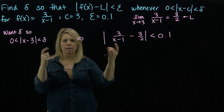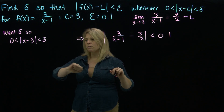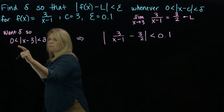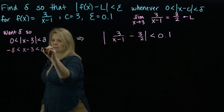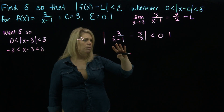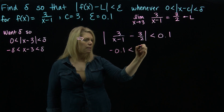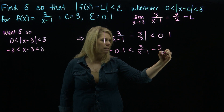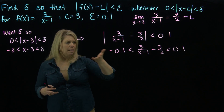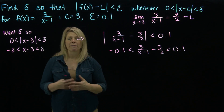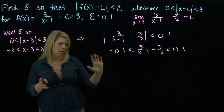Both absolute value inequalities are a bit difficult to work with directly, so we open them up and rewrite without absolute values. For the delta inequality: −delta < x − 3 < delta. For the epsilon inequality: −0.1 < 3/(x−1) − 3/2 < 0.1. Then we do algebra on this inequality, being careful not to violate the truth of the inequalities.